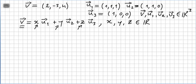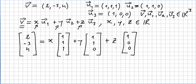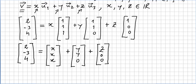For the calculations ahead, it is more handy to write all vectors as column vectors. So we have: vector V = (2, -3, 4) equals X times (1,1,1) plus Y times (1,1,0) plus Z times (1,0,0). Expanding, the components become: X+Y+Z, X+Y, and X respectively.